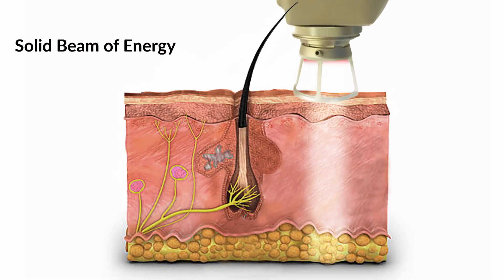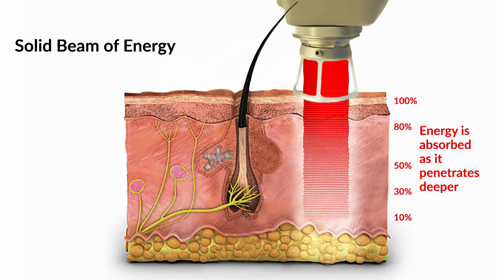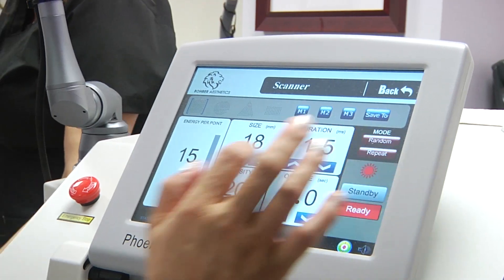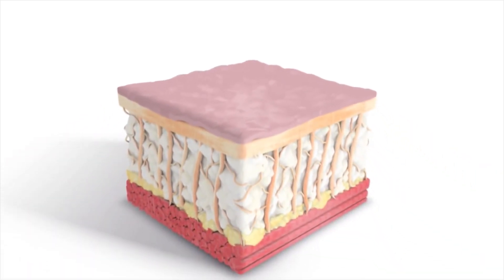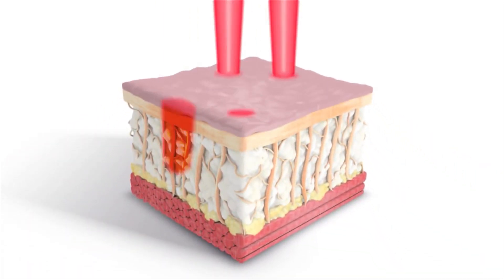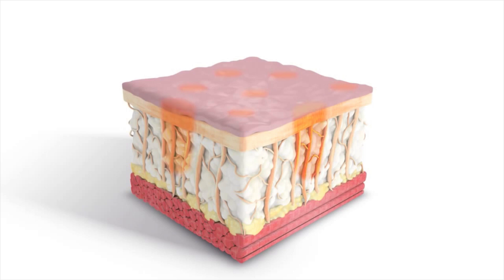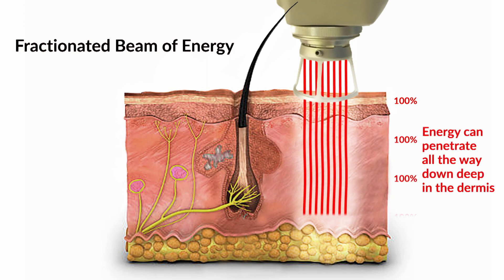When you have a solid beam of energy occupying 100% of its beam width on the skin, the energy is absorbed as it penetrates down deeper and deeper. So if I want to get energy down to the bottom of the dermis — where all that collagen is that we need to work with — then I'm going to have to use a high energy level at the surface of the skin, and that might actually cause it to be burned. On the other hand, if I can pixelate or fractionate the beam with tiny little micro-columns of energy, where most of the skin is not affected but only a certain percentage of it is, then I can use a much higher level of energy because I'm not burning the surface, and the energy can penetrate all the way down deep in the dermis where I need to effectuate changes in the dermal matrix of collagen.